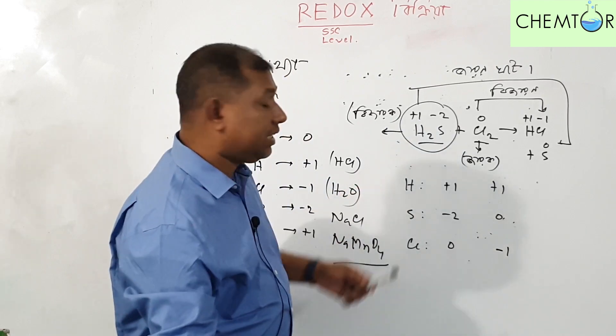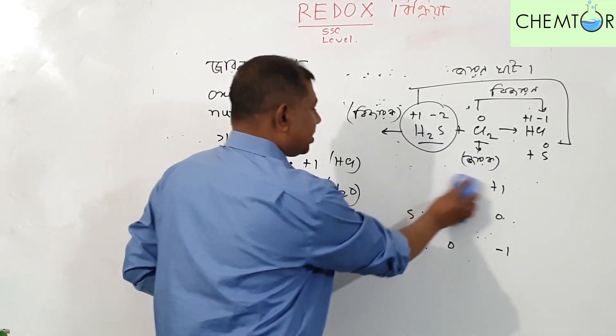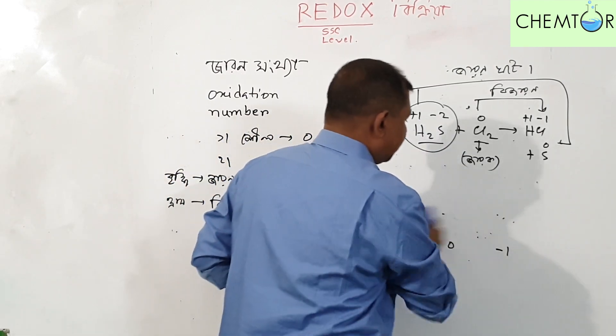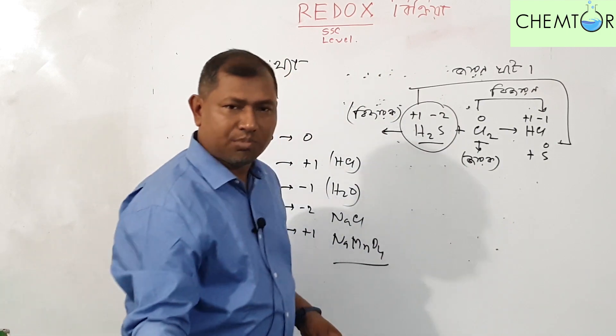Now we will see the electron transfer. The electron transfer occurs from one element to another in this redox reaction.